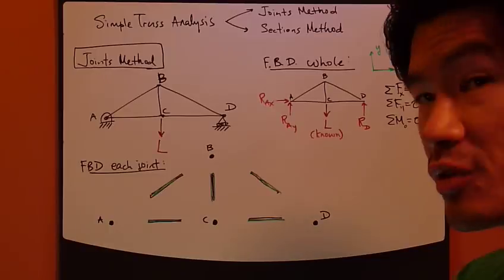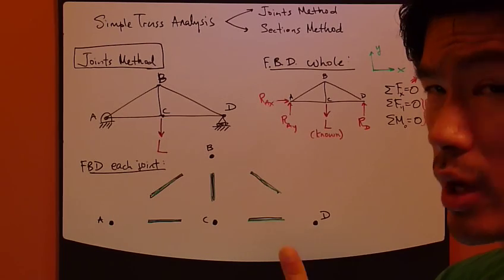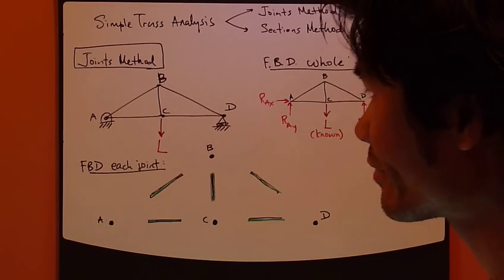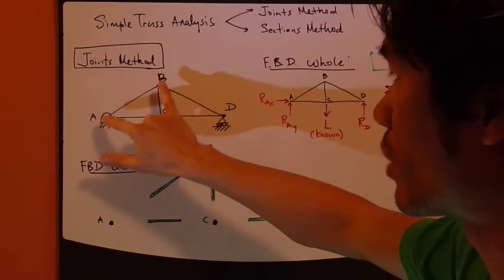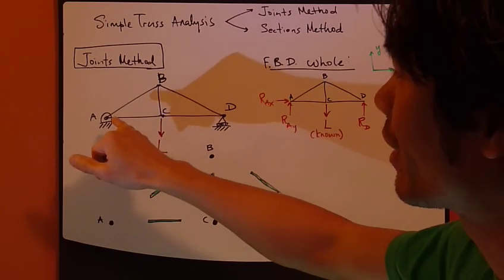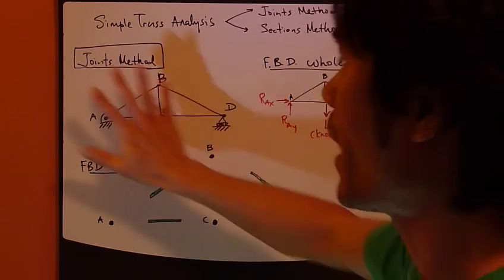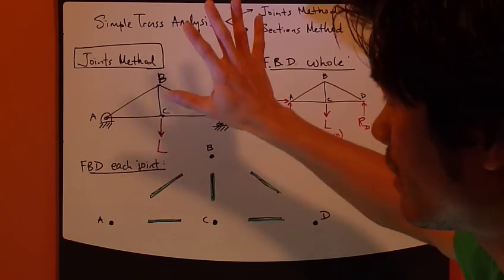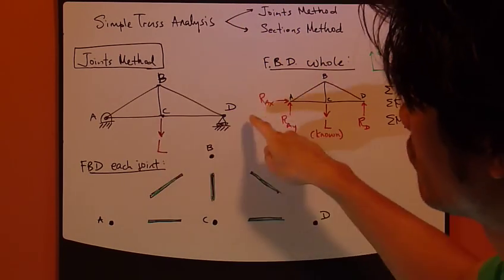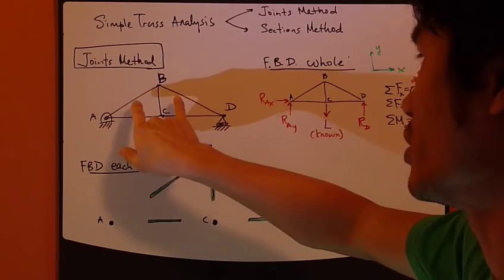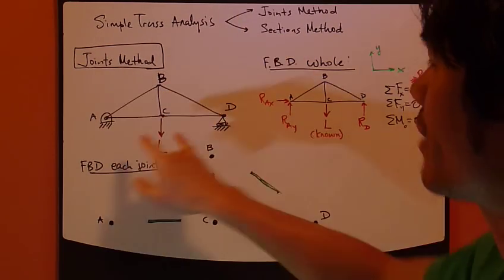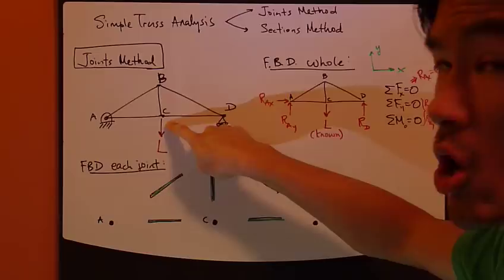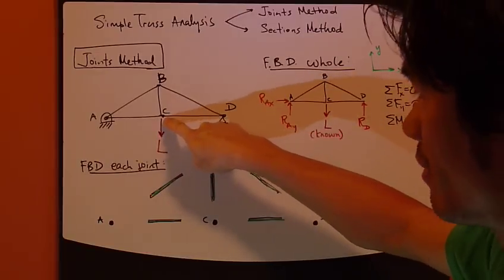In the joints method, we draw the free body diagram for joints, one joint at a time. For example, I have this simple truss here. Forces are only applied at joints, and this is a planar truss, meaning everything is two-dimensional — 2D analysis only. This truss is shaped like two triangles and is symmetrical, with AC having the same length as CD.